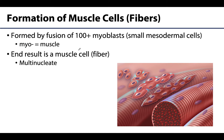During embryonic development, hundreds of myoblasts — which are small mesodermal cells; remember, the mesoderm is one of the germ layers — will start to collect together and begin to fuse. They will continue to fuse until you have a mature muscle cell, as you're looking at right here. That mature muscle cell will have hundreds of nuclei, because of how it formed with multiple cells fusing together, which is why you see all these nuclei throughout.